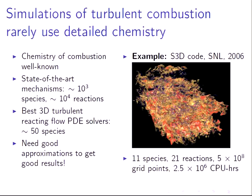In my application, turbulent combustion, people rarely use detailed models. Although we know chemistry very well — reaction mechanisms for gasoline surrogates, for biodiesel, that are thousands of species and tens of thousands of reactions — and there are even programs that generate reaction mechanisms for a given starting set of species that are an order of magnitude larger than that, due to memory and processing limitations, the best 3D turbulent combustion PDE codes can only accommodate around 50 species.